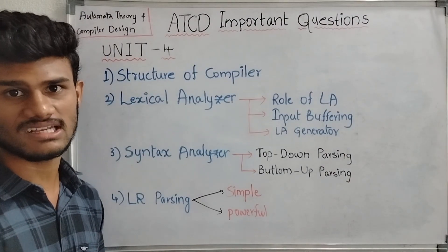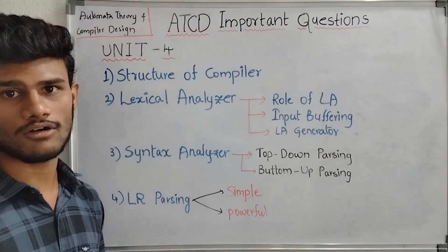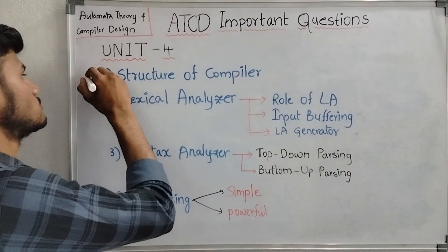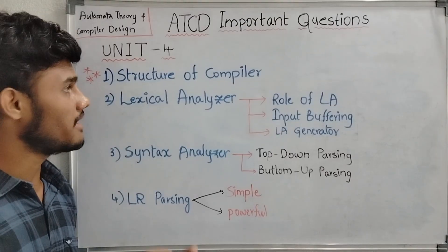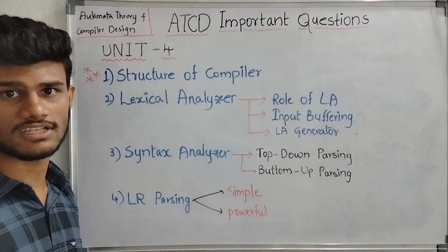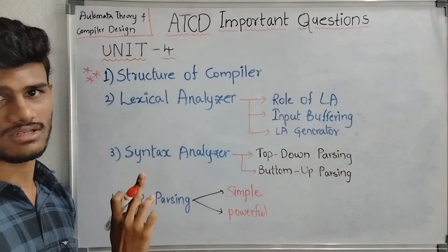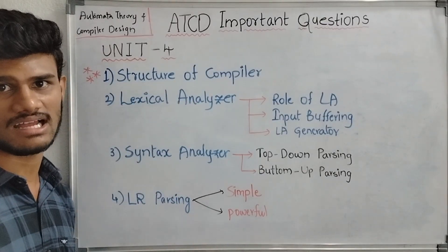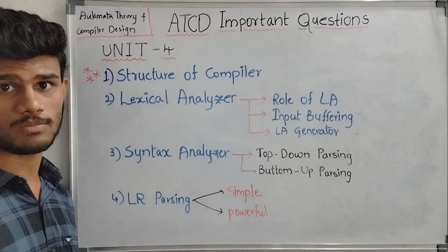Coming to the fourth unit, which is completely on Compiler Design. The first three units covered Automata Theory. The first and most important topic in this unit is the Structure of Compiler — a basic and very important question worth 5 or 10 marks. The structure includes: lexical analysis, syntax analysis, semantic analysis, intermediate code generator, code optimizer, and code generator.